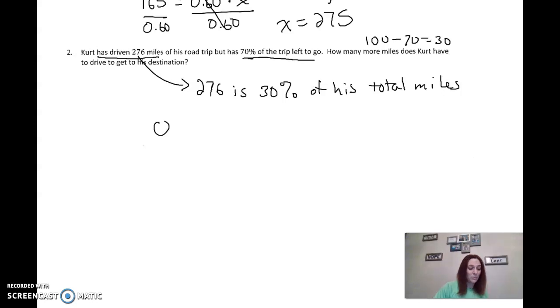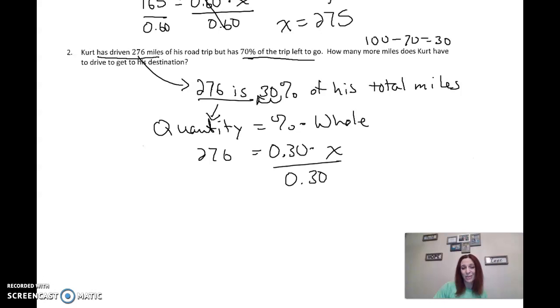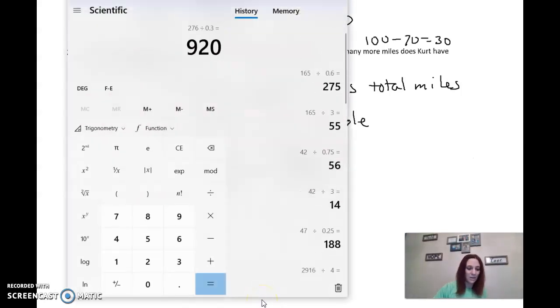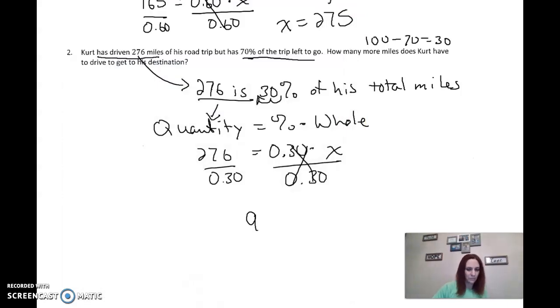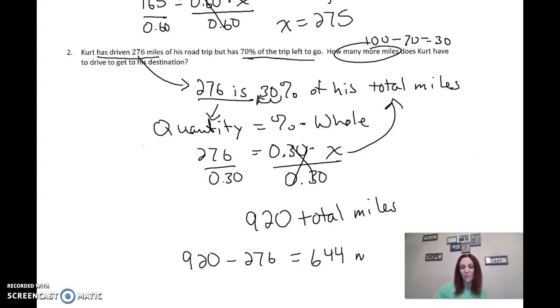Right? So now if I want to do my equation, quantity - this is the 'is' part that goes in for quantity. 30% I change to a decimal. And I don't know what his total miles are. Look it, I'm getting rid of the 0.3, so it's multiplying, so I undo multiplying with dividing, and I get 276 divided by 0.3, 920. So what was x? x was his total miles, right? So he has 920 miles. Let's just make sure we're answering the question being asked. How many more miles does he have? Oh, well, he has 920, and he's driven 276. So if you subtract them, he has 644 miles to go.